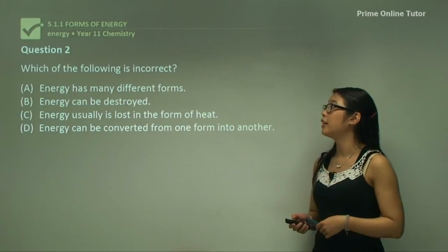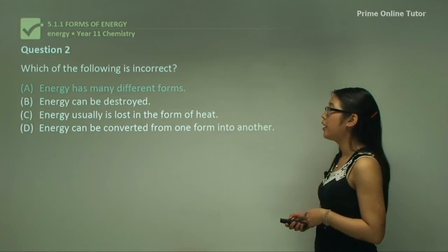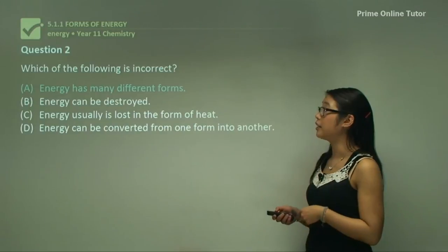Which of the following is correct? Incorrect. Energy has many different forms. Yes, that's true. We have kinetic energy, we have chemical potential energy.